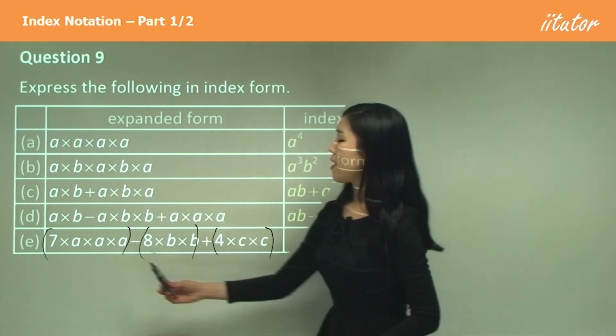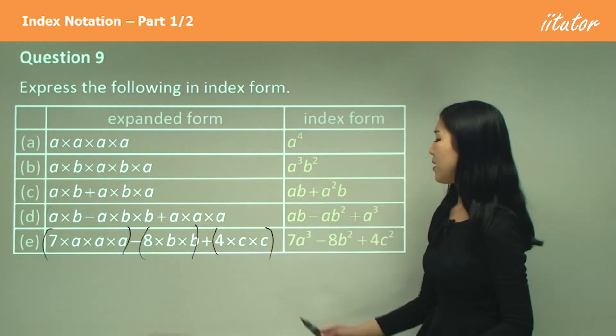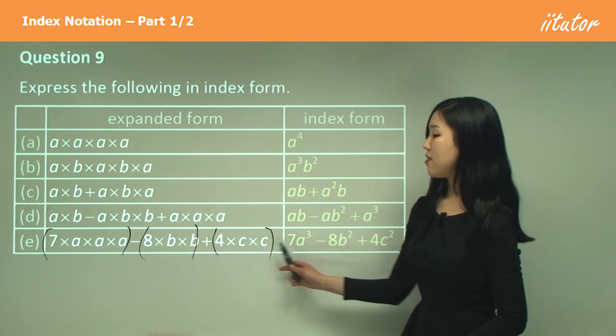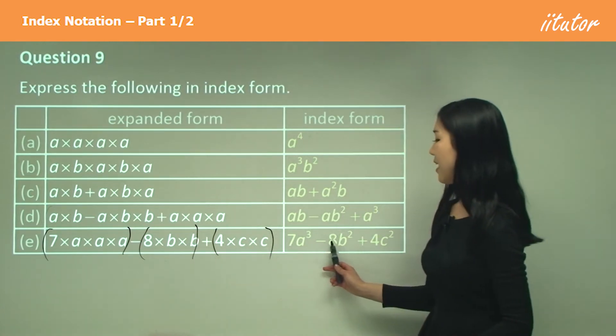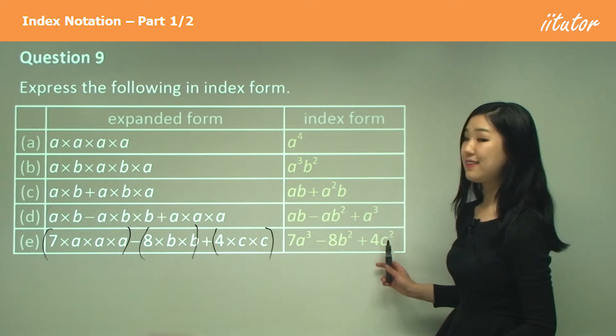So there's three lots of a's, two b's, two c's. So the first one will be seven a cubed. The second one will be minus eight b squared. The last one will be four and c squared.